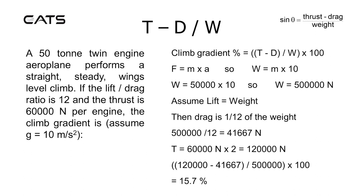There's a twin engine aircraft and all engines were operating with 60,000 newtons of thrust per engine, so 60,000 times 2 is 120,000 newtons total thrust. Going back to the formula, climb gradient as percentage equals thrust minus drag: thrust is 120,000 newtons, drag is 41,667 newtons. Subtract drag from thrust and divide by the weight of 500,000 newtons, then multiply by 100 to get a climb gradient of 15.7%.